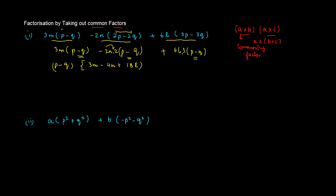So, now, basically, we have factorized this equation into two parts, wherein this is equal to P minus Q into 3M minus 4N plus 18L.